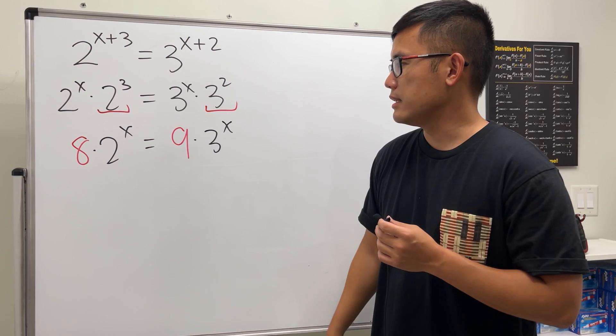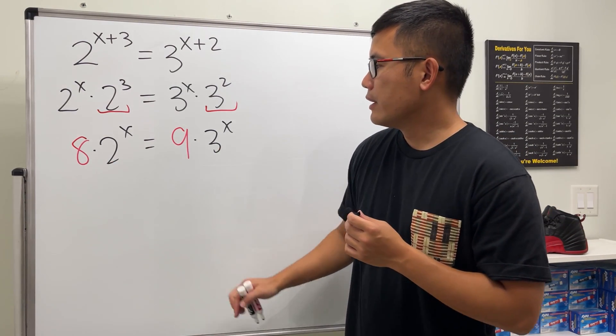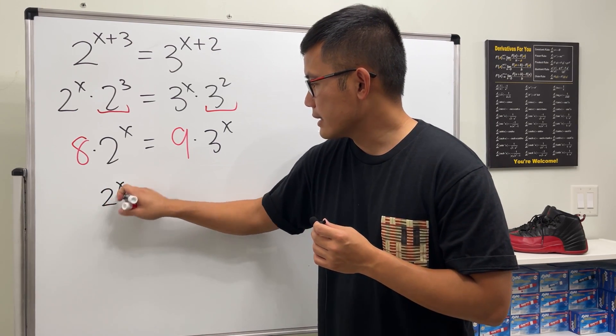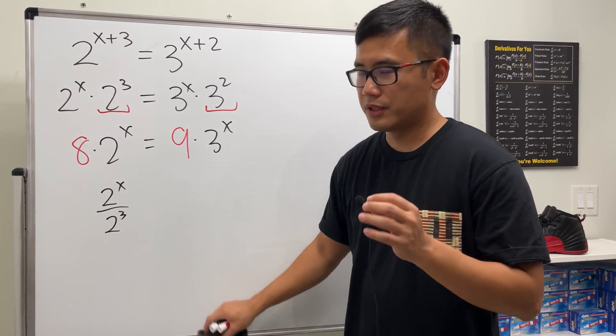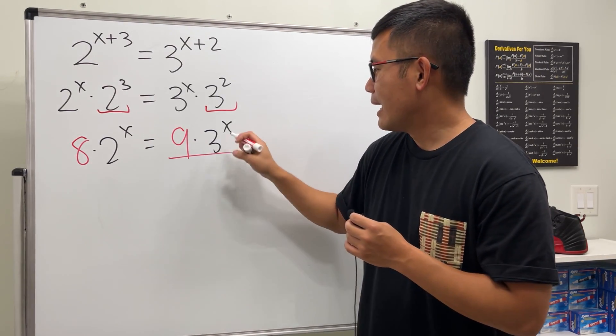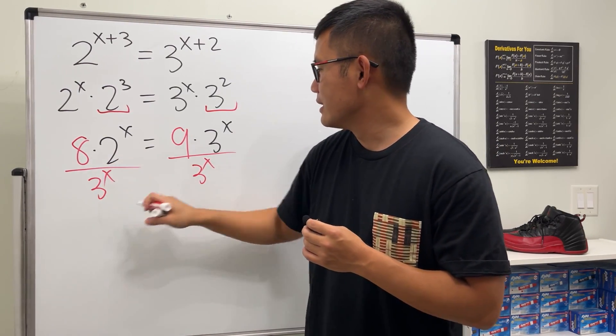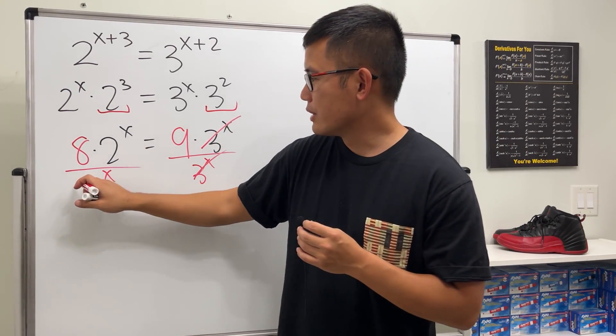And I will just go ahead and put all the numbers on one side and all the x's on the other. I'm going to divide by 3 to the x like this, and then divide by 3 to the x like this so this and that cancel and I will also divide by 8 so they cancel.